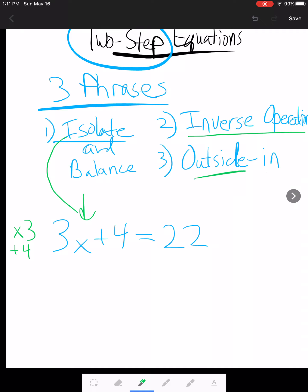We want to work from the outside in. So the plus 4 is literally further away from our x than the 3 is. So we'll start by doing the inverse of plus 4. And so the inverse of plus 4 is going to be to subtract 4. And so we're going to balance the equation. One trick I like to use is a mirror line. So whatever you do on one side, you have to balance it out by doing on the other side.